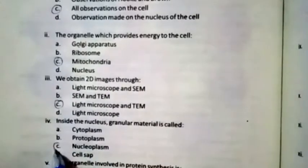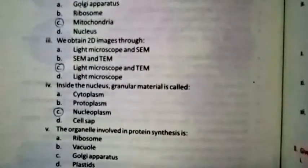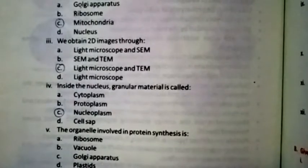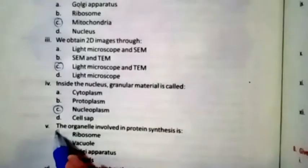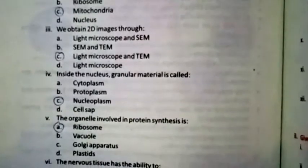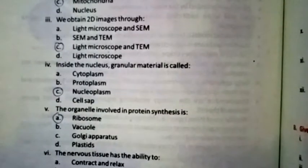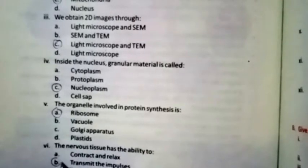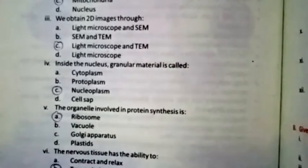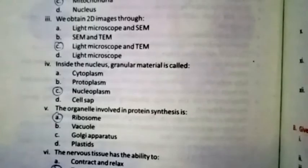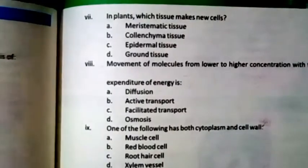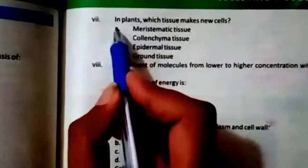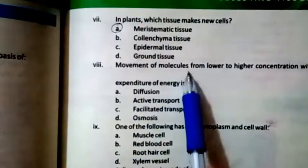We obtain a 2D image through a light microscope and TEM. Question four: Inside the nucleus, the granular material is called nuclear plasma. Question five: The organelle involved in protein synthesis is ribosome. Question six: The nervous tissue has the ability to — the right option is B — transmit impulses.